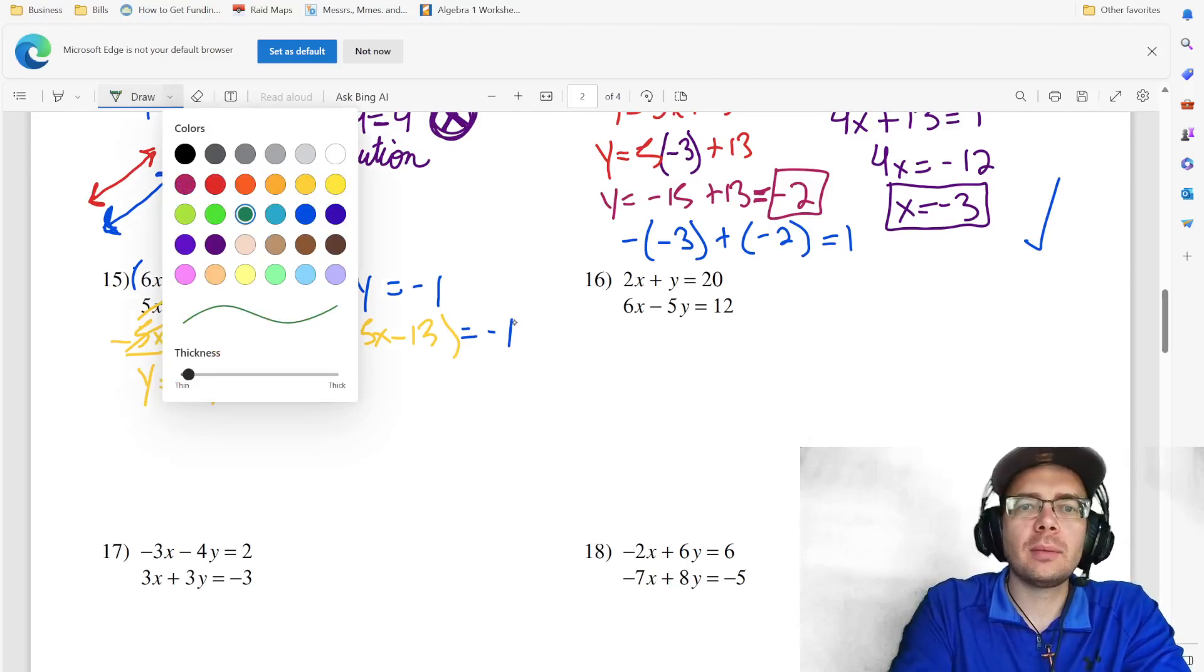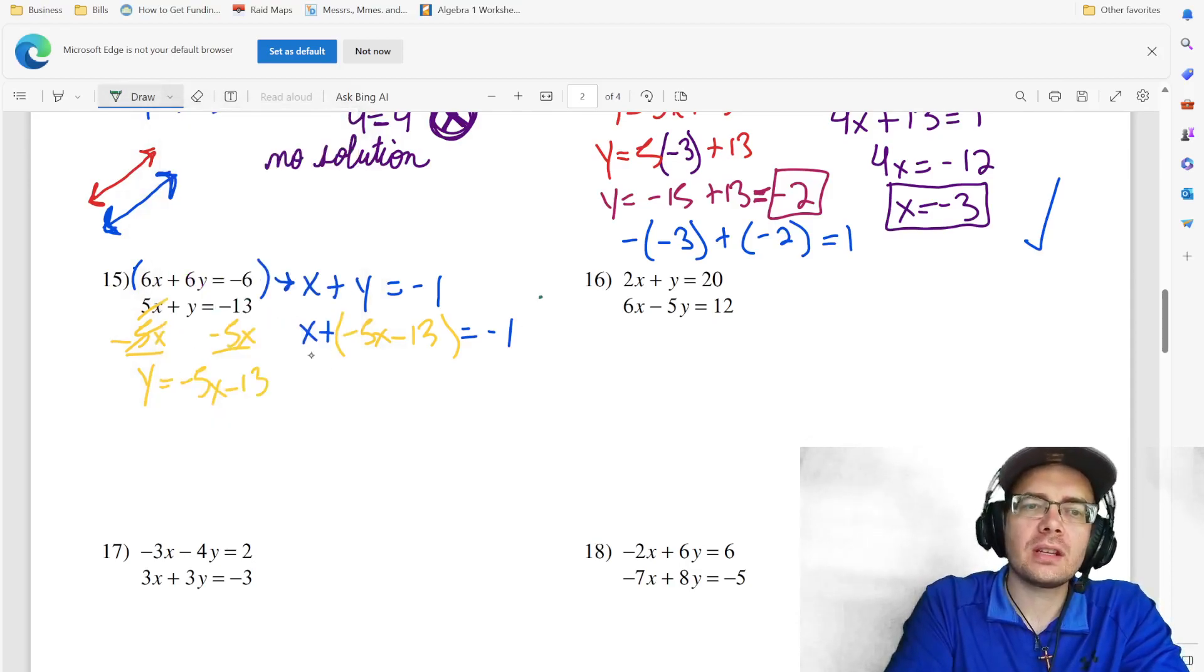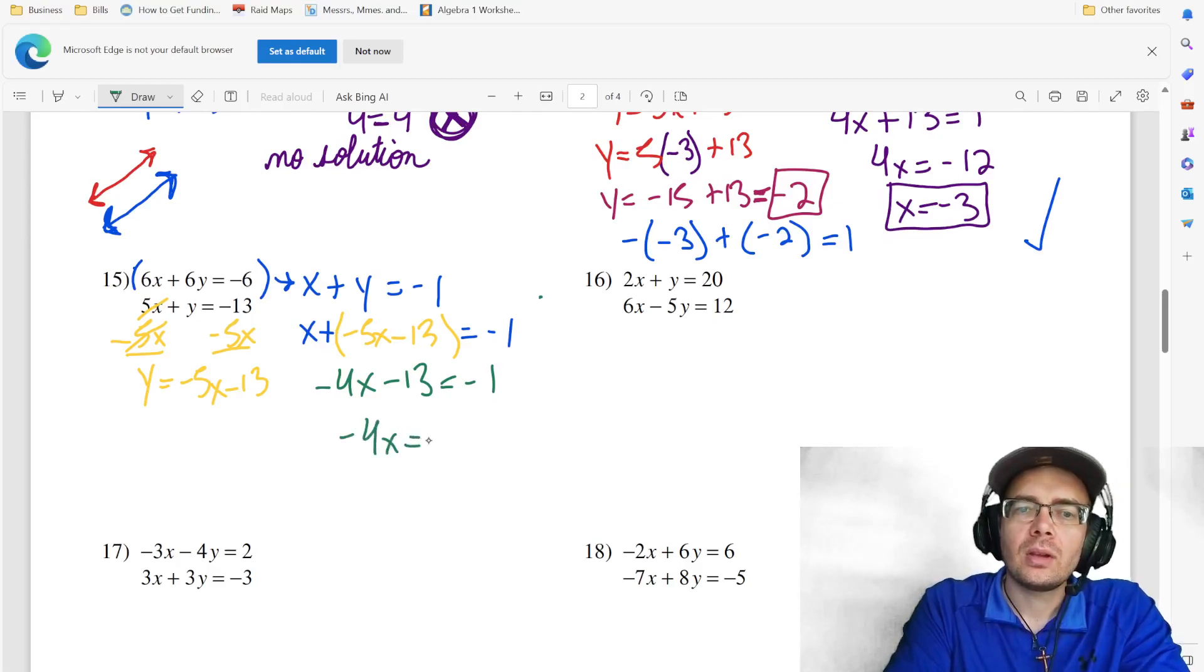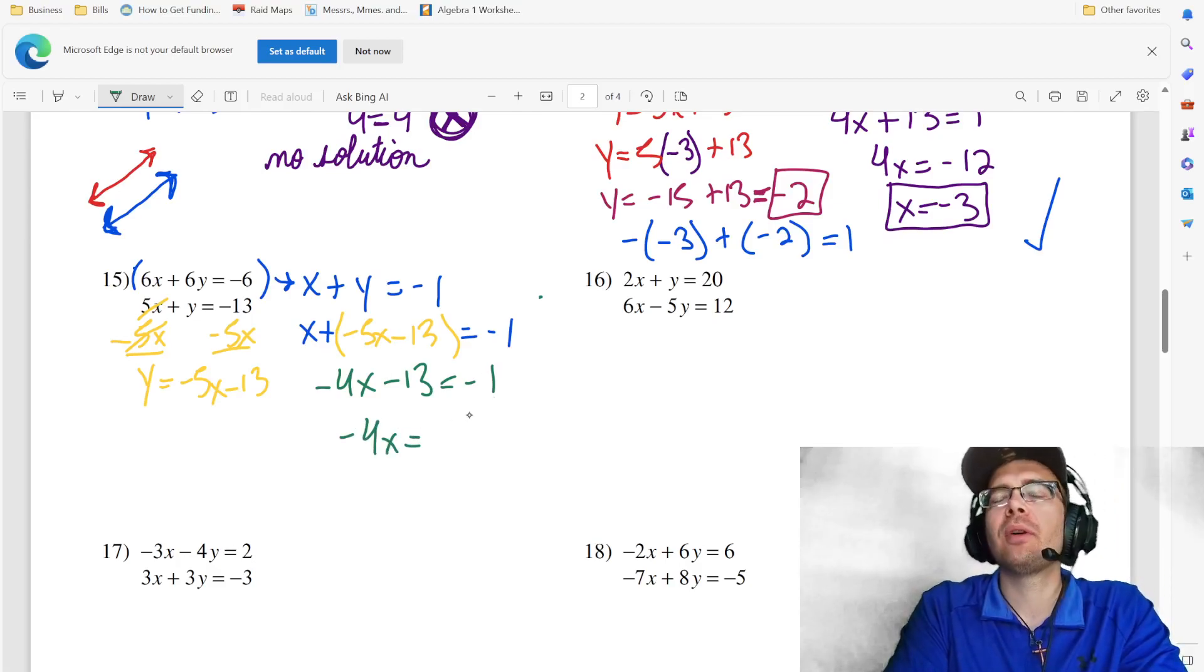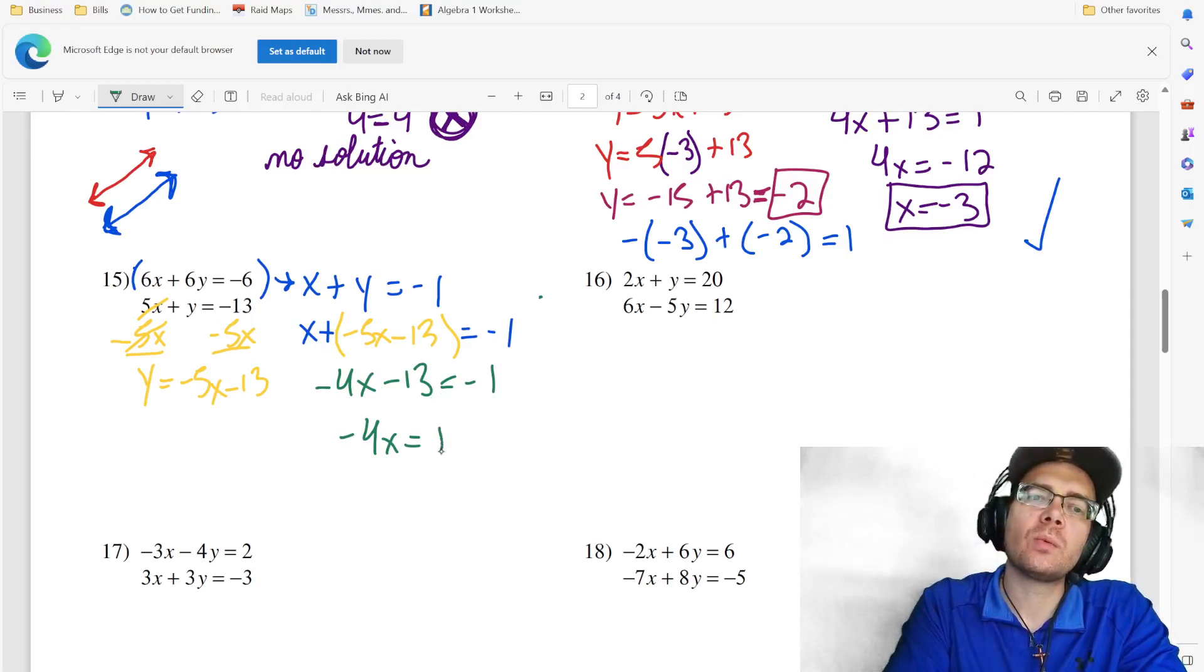Then blue and yellow make green, so the rest of this is going to be green. x plus negative five x is negative four x minus 13 still. That doesn't combine with anything. Add 13 to both sides. So adding 13 to negative one would be the same thing as 13 minus one, which is 12. So x is negative three.